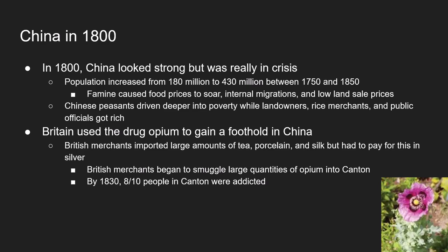Between 1750 and 1850, China's population increased from 180 million to somewhere around 450 million. This meant that the demand for food vastly outweighed the supply. China ended up with famines, food prices in cities were soaring, and people couldn't afford to eat. Starving peasants fled to various parts of the country hoping to find food, and were forced to sell their land to speculators at dirt-cheap prices. Chinese peasants — truly the backbone of the economy — were driven deeper and deeper into poverty.